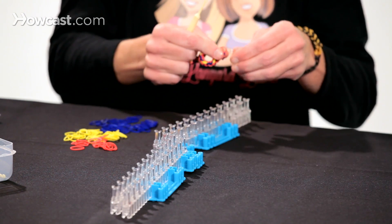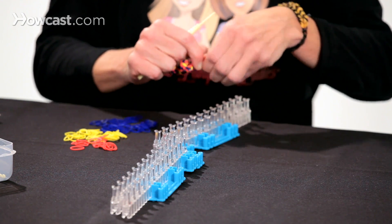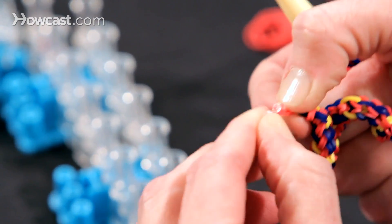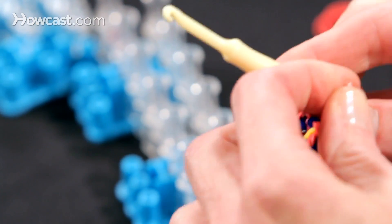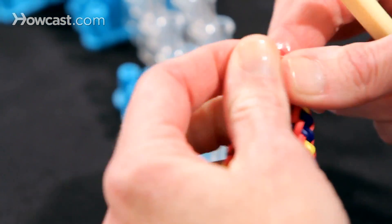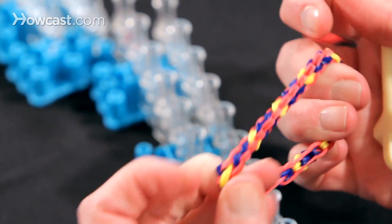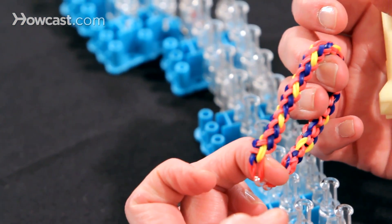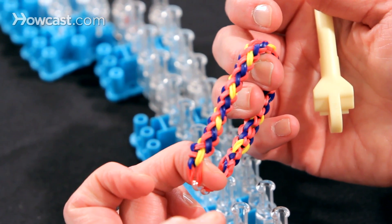Okay, I can put my S hook at this end. And we're going to attach it on this side. And here you have your Rainbow Loom Braid Bracelet.